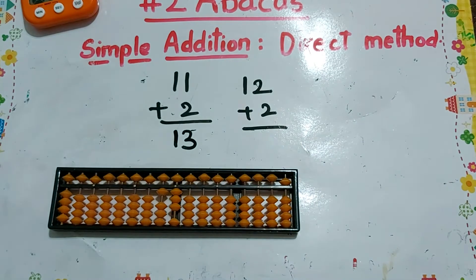11 plus 2. How to keep 11 on our abacus? 1, 1. So 11 plus 2, the answer is 13. Next, 12 plus 2, the answer is 14.